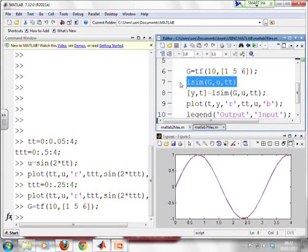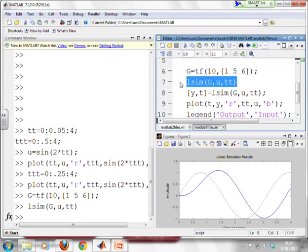Now, I can use lsim without any output arguments, just like I can use step without any output arguments. And what do you get? You see, you get this figure, which has got a very obvious blue curve, which is the system output. But you'll notice it's put this faint curve in the background and that corresponds to the input signal, which you've used.